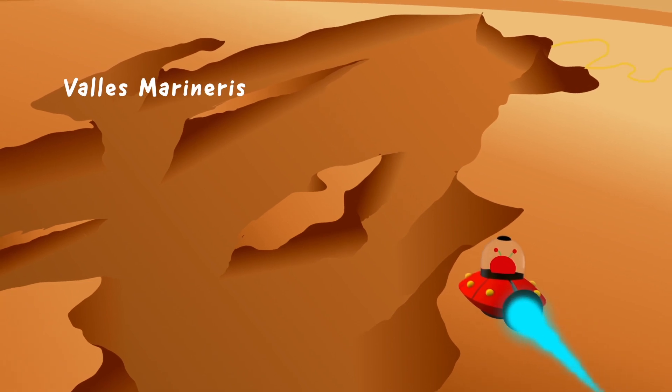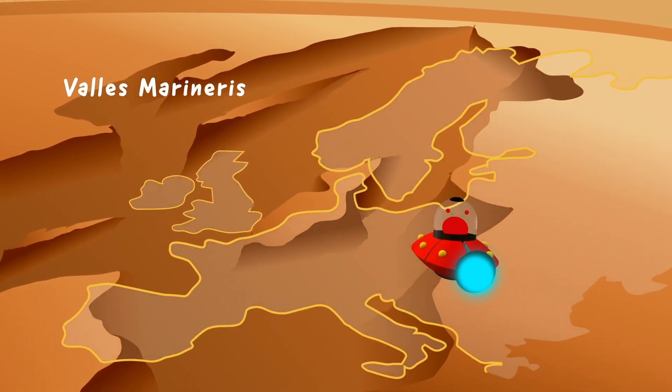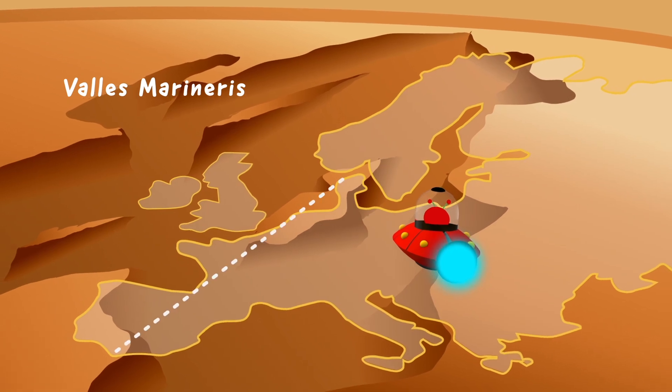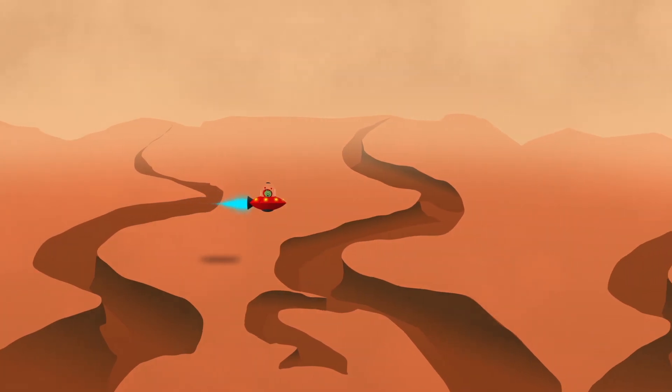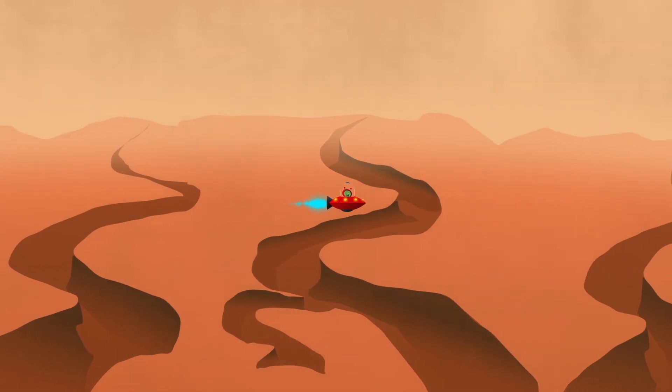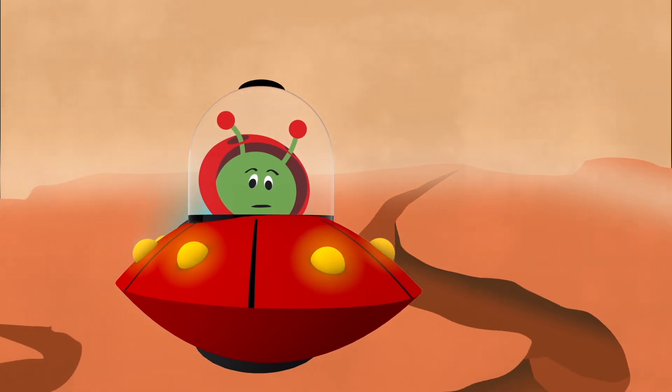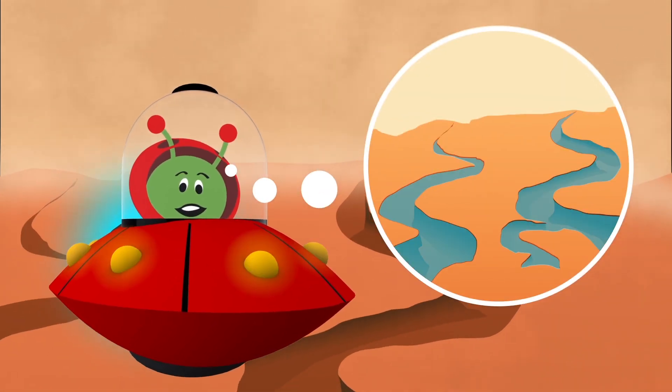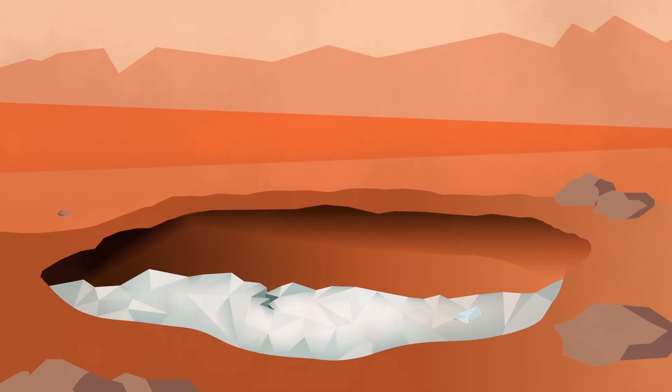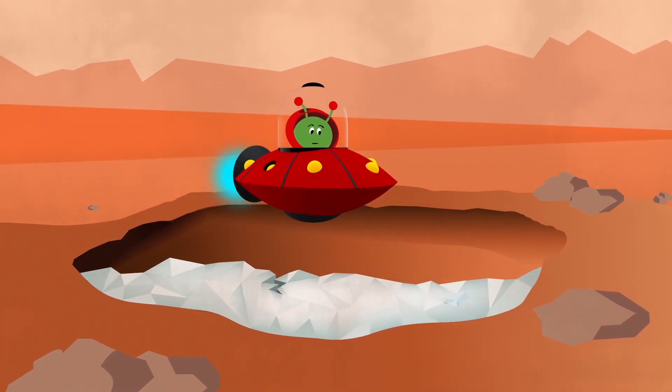Wow! From up here, I can see Valles Marineris, a gigantic canyon that would stretch from Spain to Finland. And I can see that Mars has lots of dry riverbeds where water must have once flowed a long time ago. I can't see any rivers today, only ice in a few places.